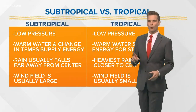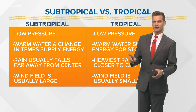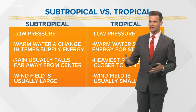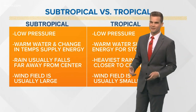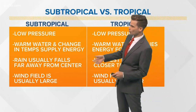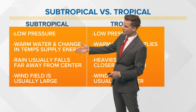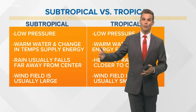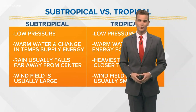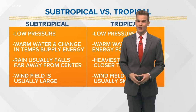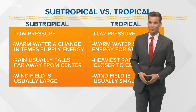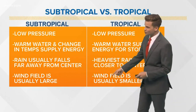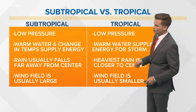One difference from subtropical to tropical is that subtropical gets its energy from other places as well as the warm water. Also, the rain is usually far away from the center of the storm — subtropical systems are usually very lopsided — and their wind fields are usually a lot larger than a tropical system.